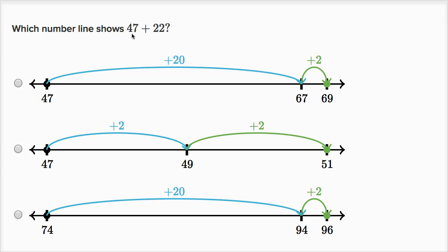Which number line shows 47 plus 22? Let's see, this first number line, we're starting at 47, then we add 20 to get to 67, and then we add two to get to 69. So if you add 20 and then you're adding two, you're adding 22. So this one seems right.